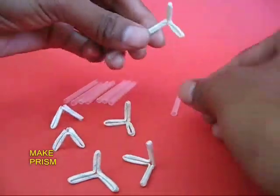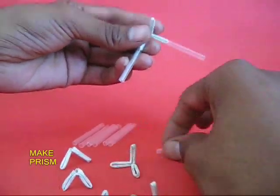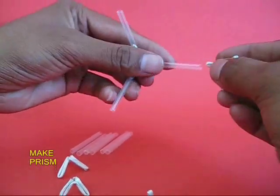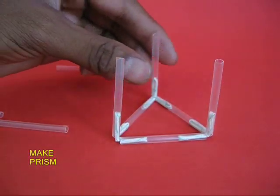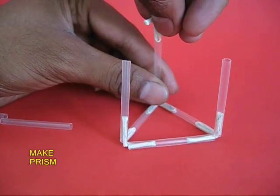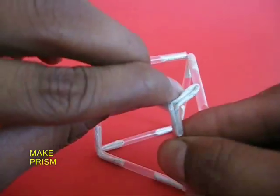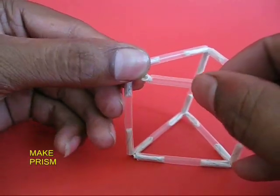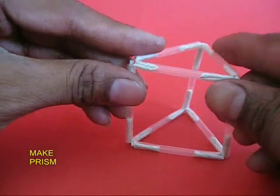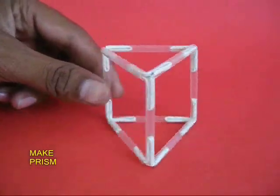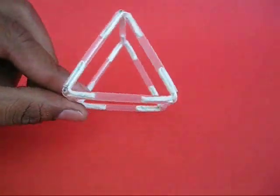Now instead of ordinary straws, you can use the refills which are transparent, so the joint also shows very clearly. This is a prism using six joints and nine pieces of refills, a regular prism.